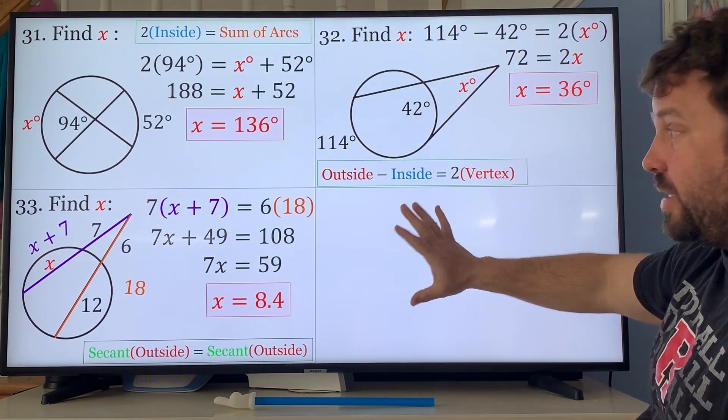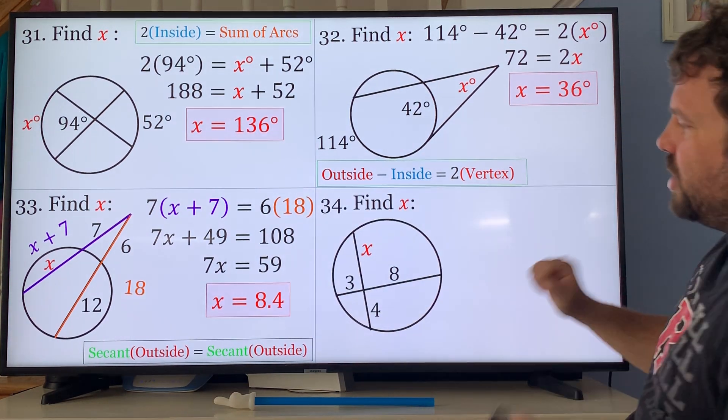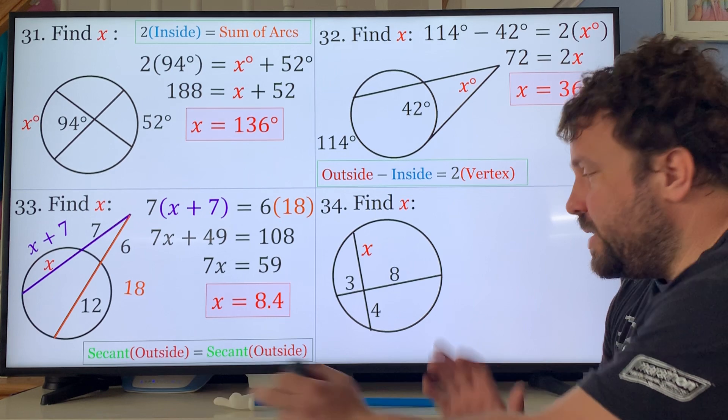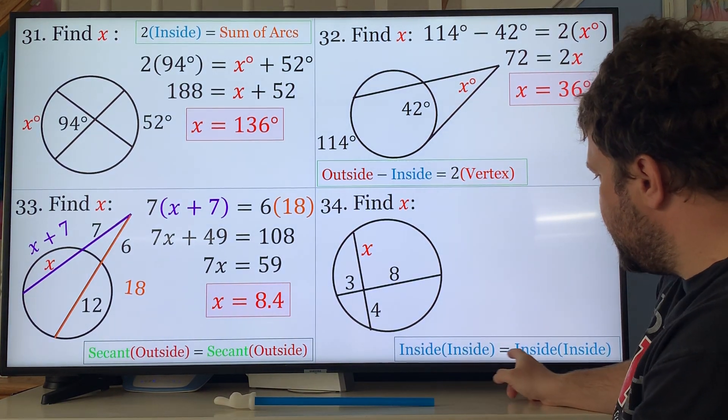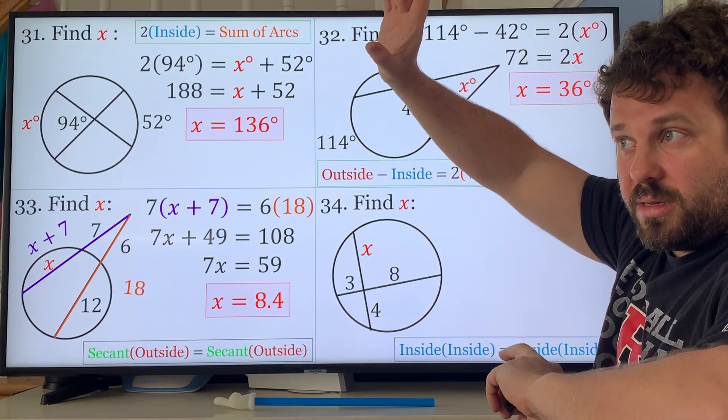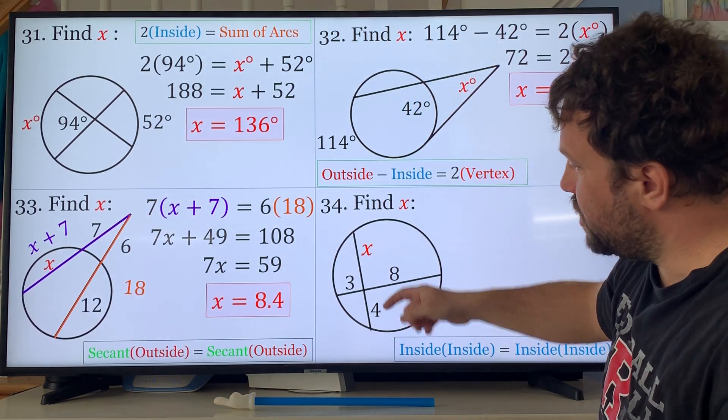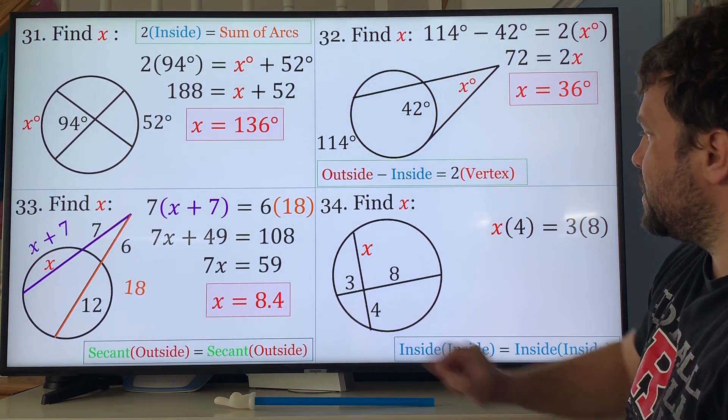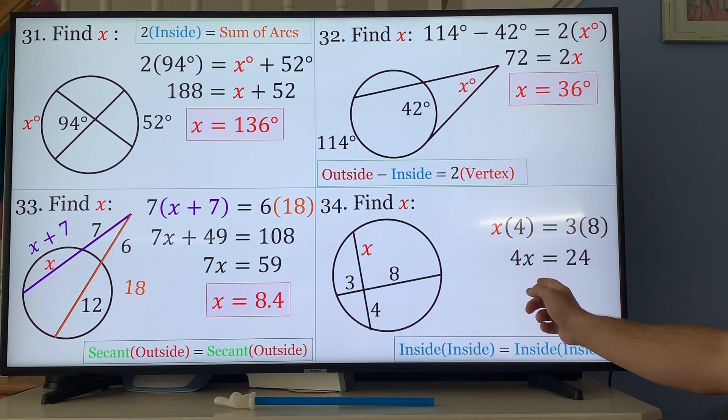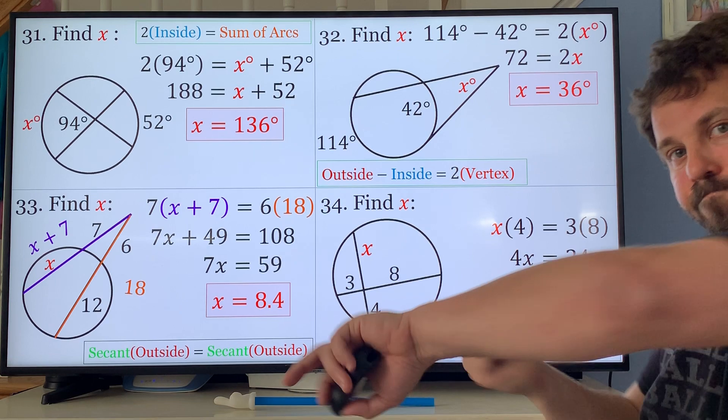Last rule and then we get those circles. Find x. This is the easy one: you multiply the little pieces of the chords together. Inside times inside equals inside times inside. Chord segment times adjacent chord segment. So 4 times x equals 3 times 8, 4x equals 24, 4 divided by 24 equals 6.